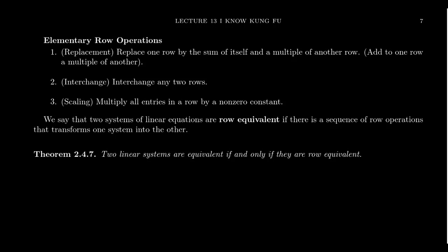So far in lecture 13, we have learned how we can encode a system of linear equations using augmented matrices, and we've learned that if that augmented matrix is in echelon form, especially if it's in row-reduced echelon form, then we can easily solve the associated system of linear equations.